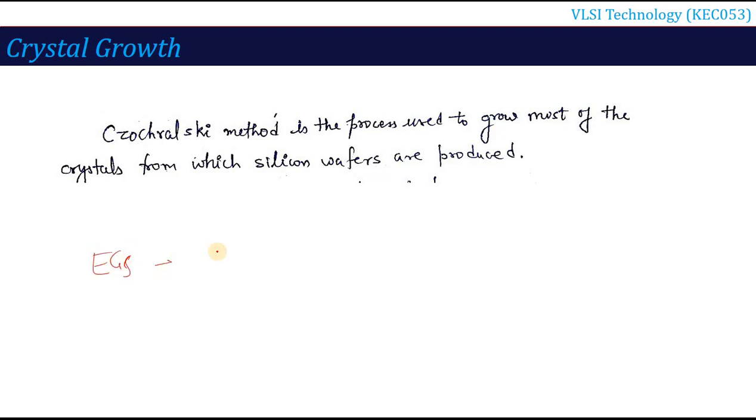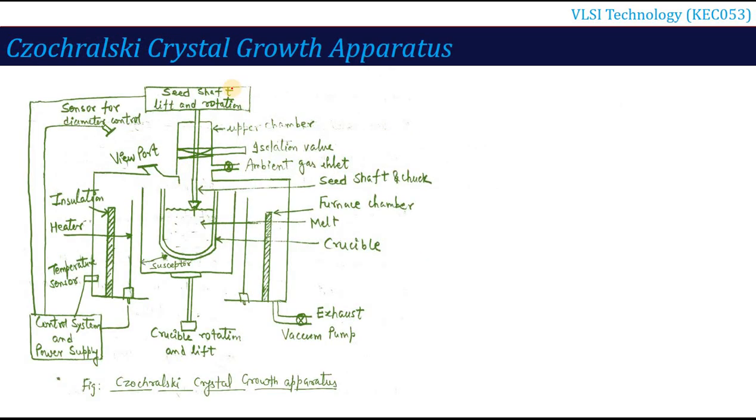For making silicon wafer, what is the first silicon crystal that we need? That is EGS. Now from this EGS which will become silicon crystal in the form of silicon wafer, this is the first step which will come in the form of the crystal. That is called the CZ method, Czochralski method, to generate the silicon ingot from which silicon wafers are produced.